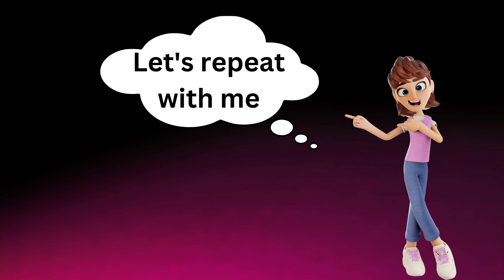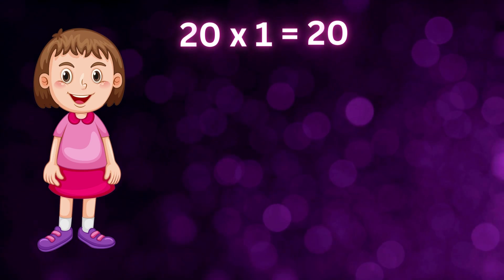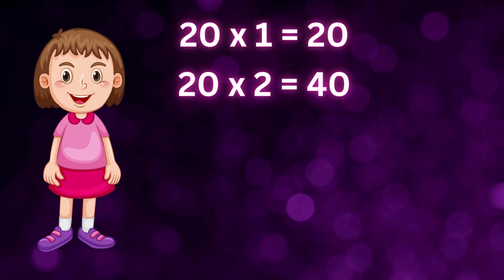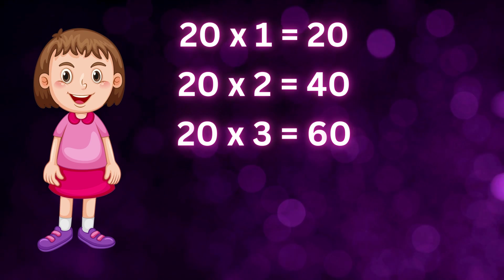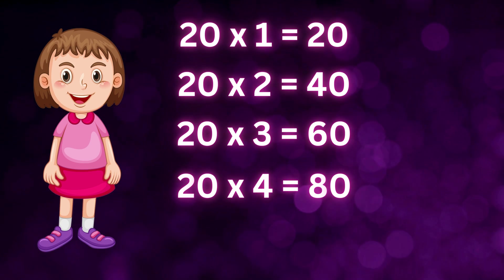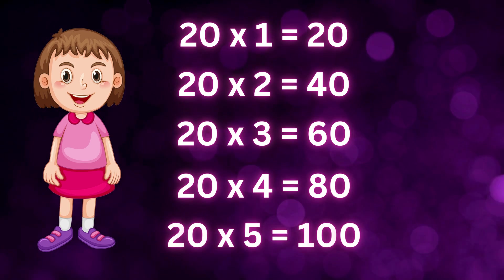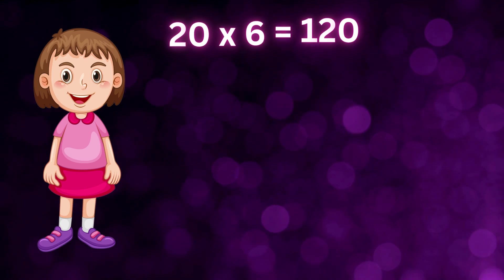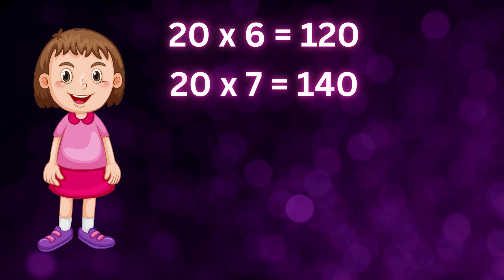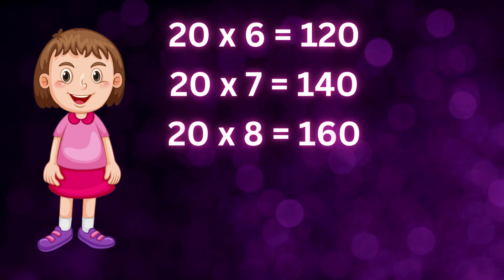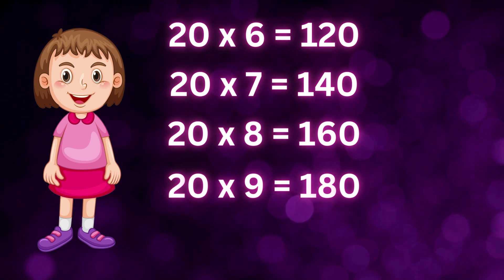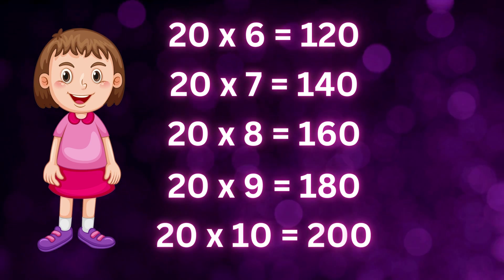Let's repeat with me: twenty ones are twenty, twenty twos are forty, twenty threes are sixty, twenty fours are eighty, twenty fives are one hundred, twenty sixes are one hundred twenty, twenty sevens are one hundred forty, twenty eights are one hundred sixty, twenty nines are one hundred eighty, twenty tens are two hundred.